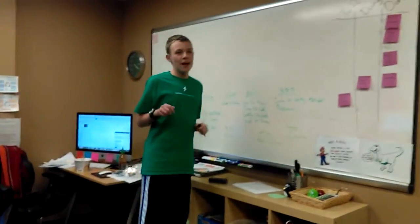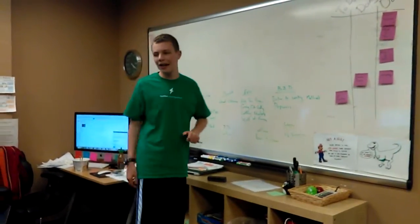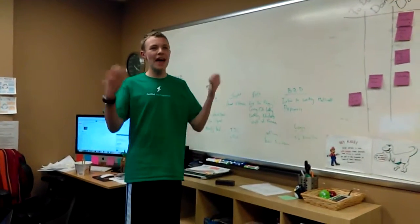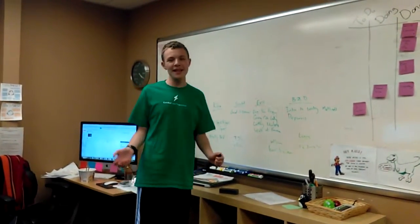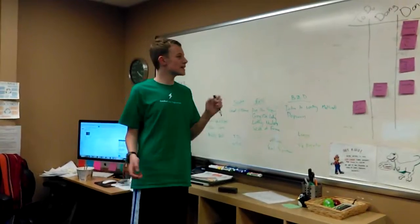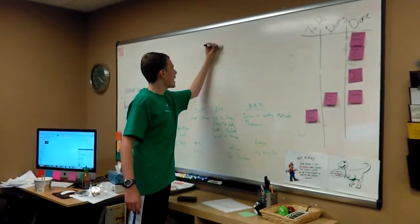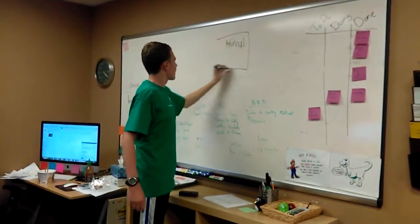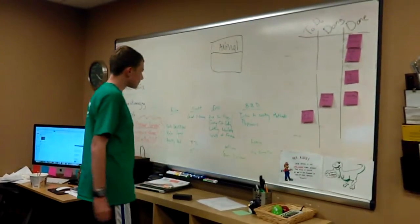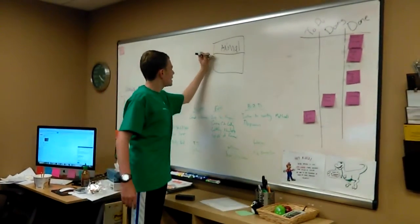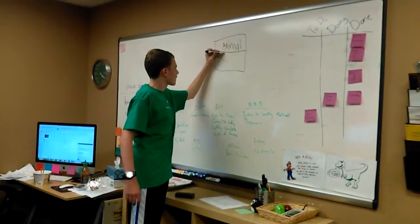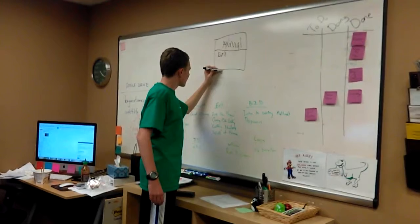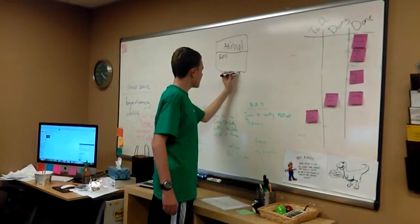C# and Java do not allow multiple inheritance, and this is a protection because if it was allowed, there are many nasty things that could happen. For example, suppose you have a class named Animal, and it had an eat method. Now suppose that you had